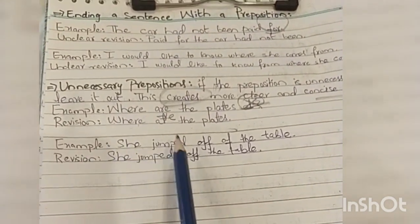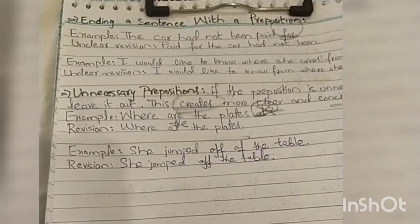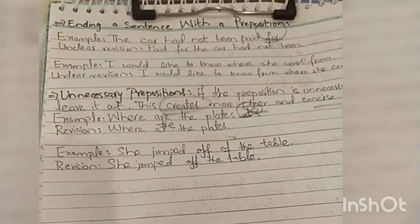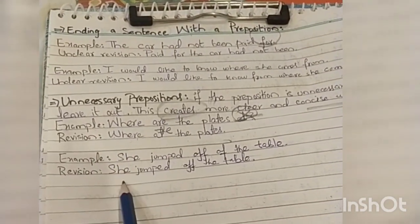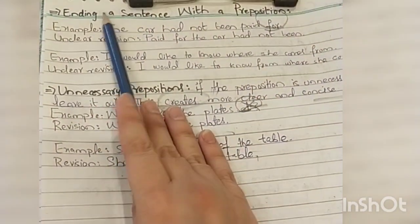The second example is she jumped off the table. Two times off? No, that's not right. So what are you going to write? We're going to write she jumped off the table.